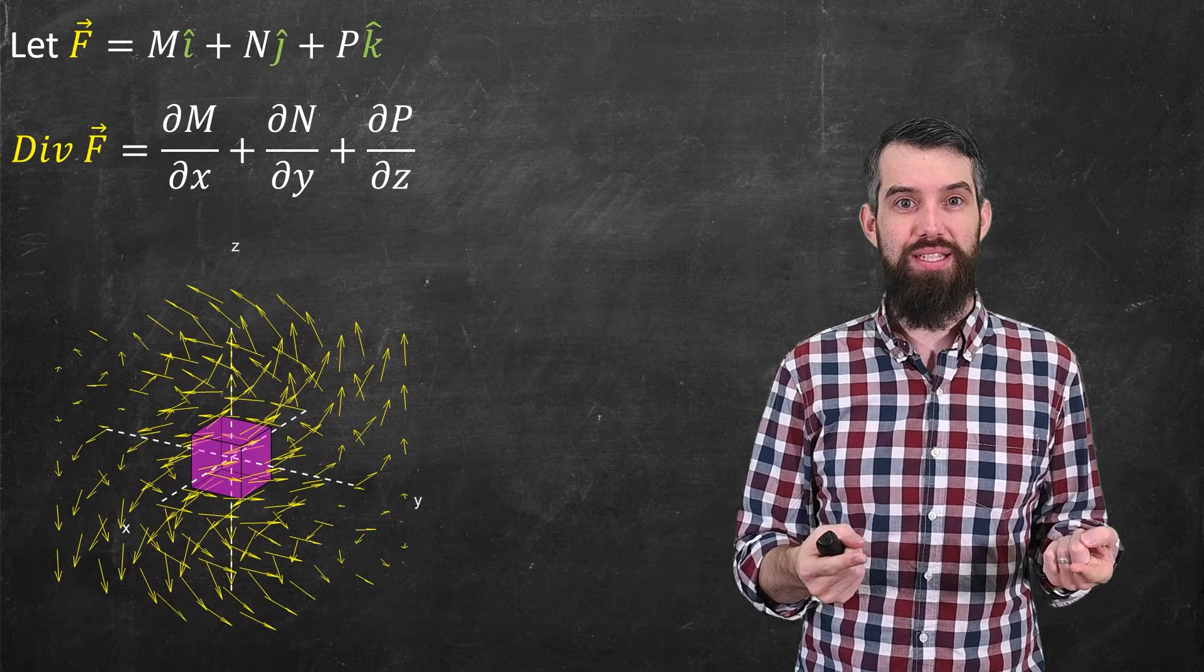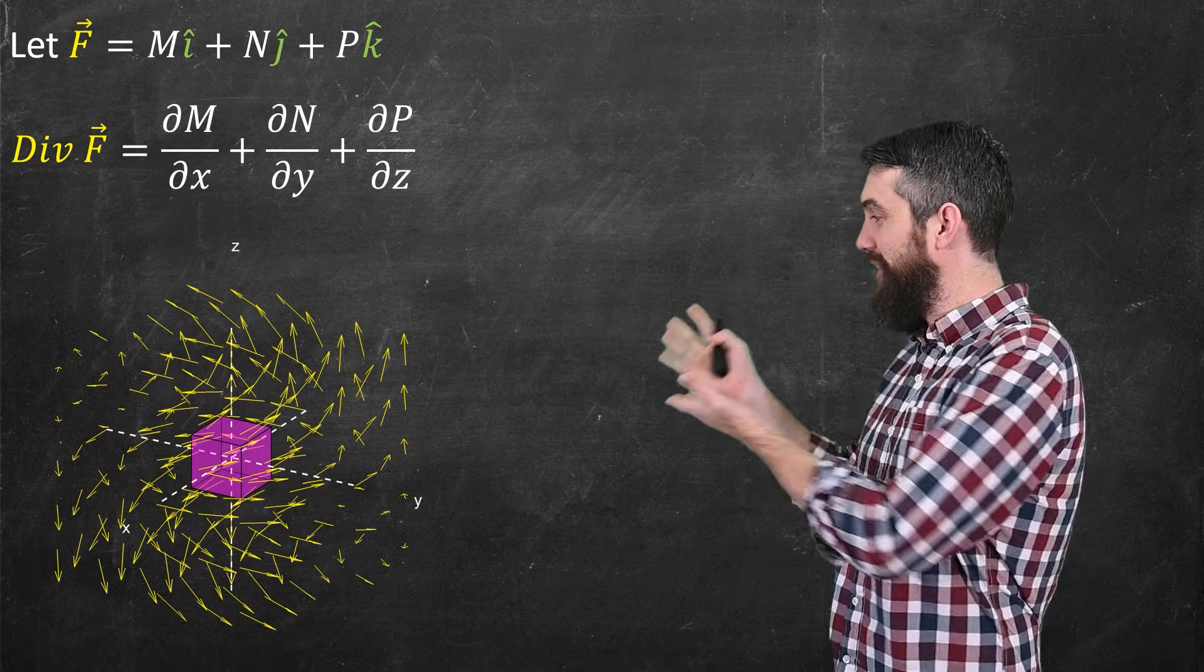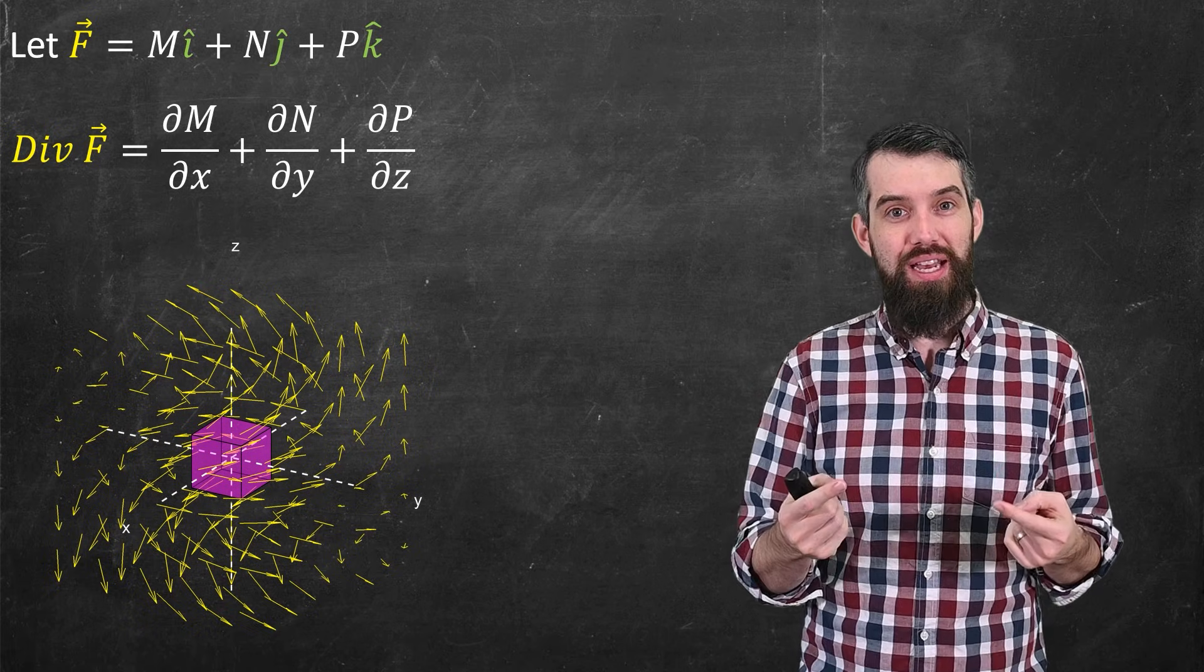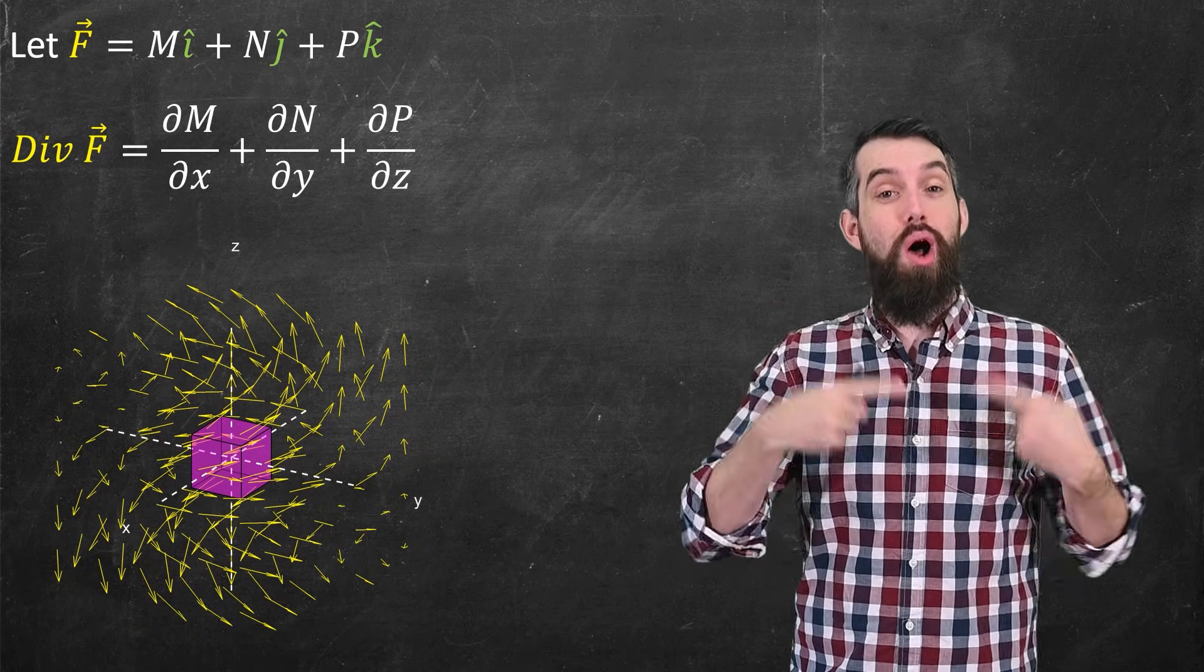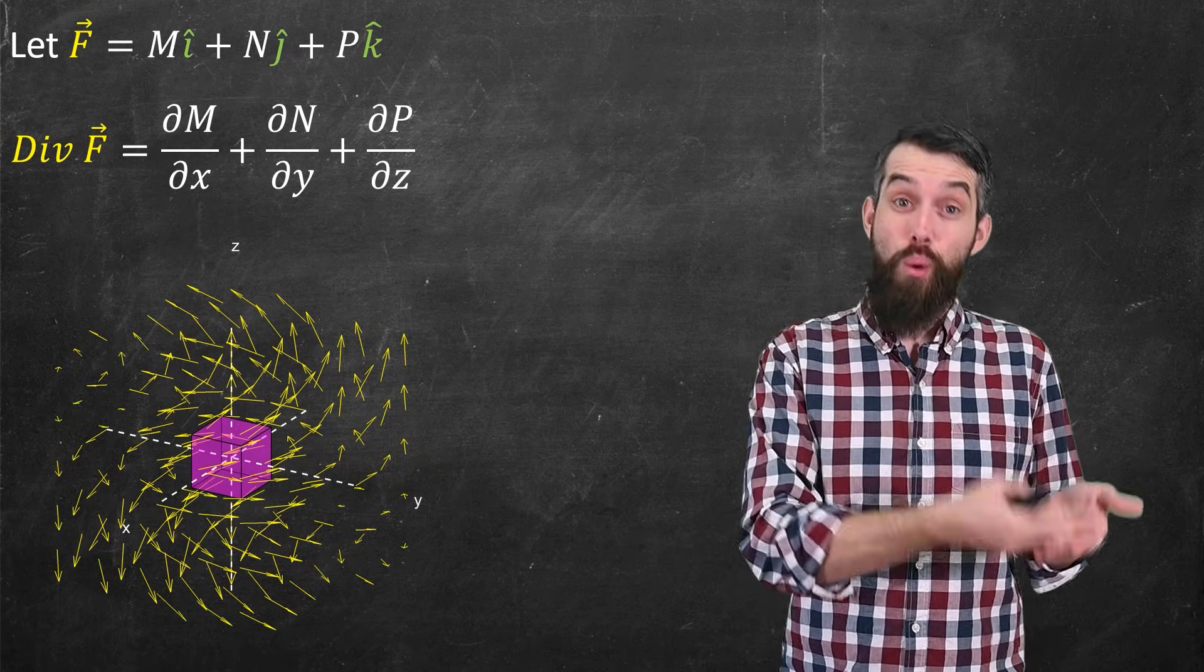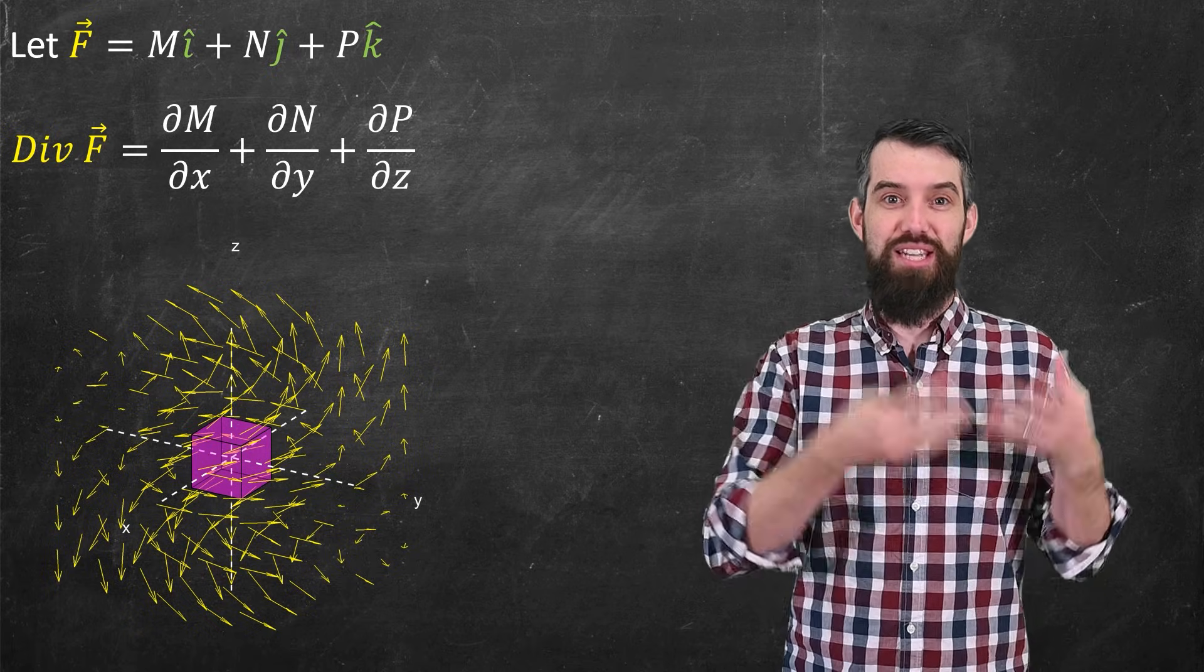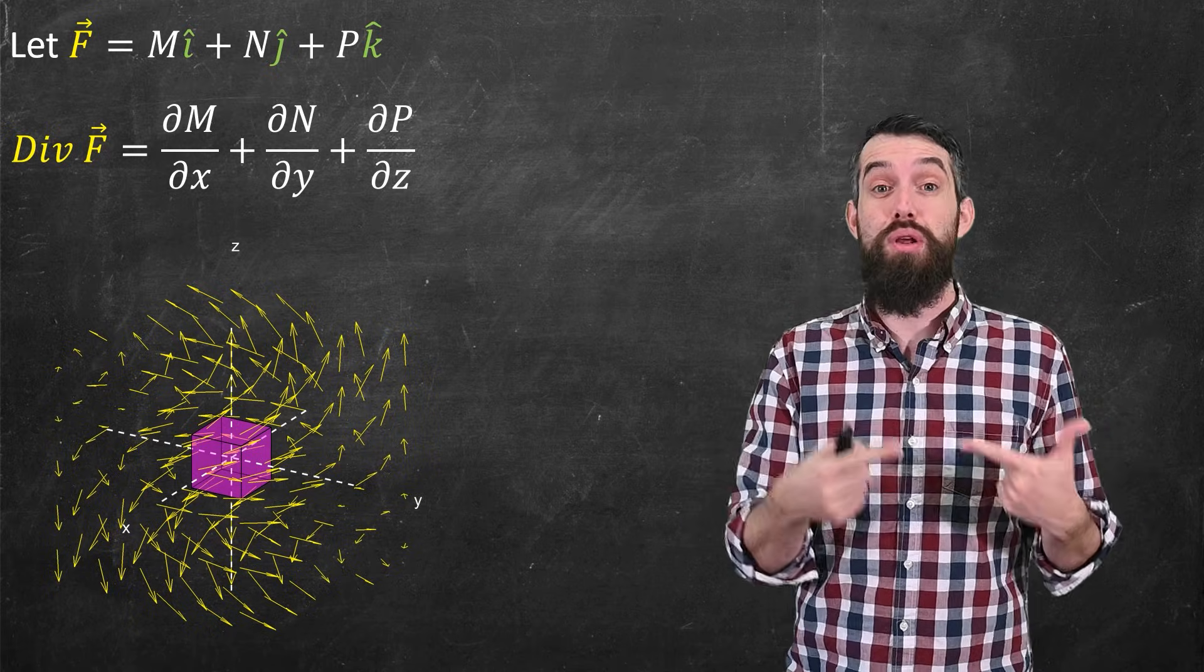So going back to the three-dimensional case, the idea here now is instead of a little square, I have a little cube. And I'm asking, to what degree is the vector field spreading out across the boundary of this little cube? And as you investigate different points, and thus are investigating different little tiny boxes, the divergence may be different at different points along the field.